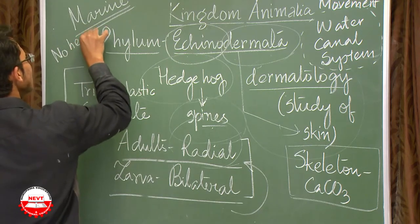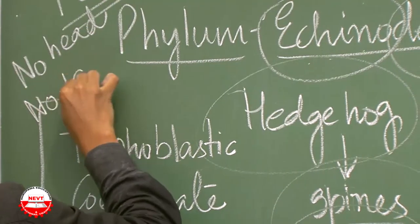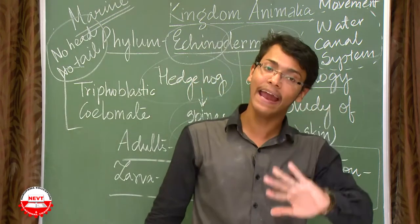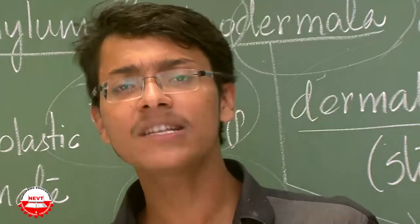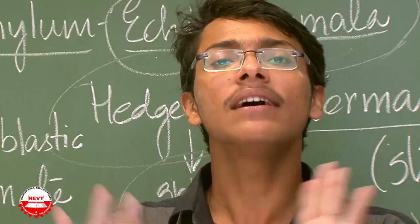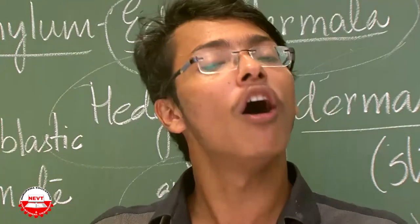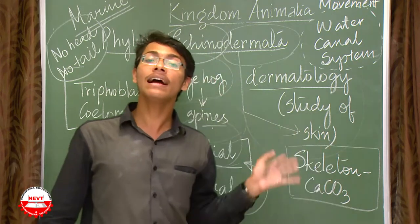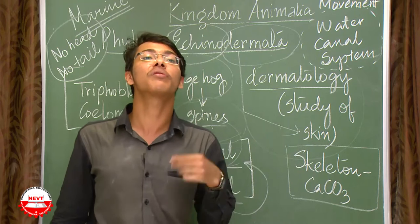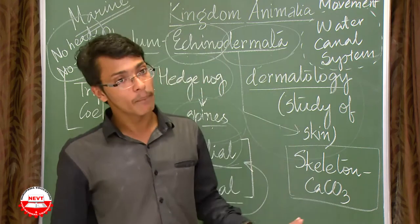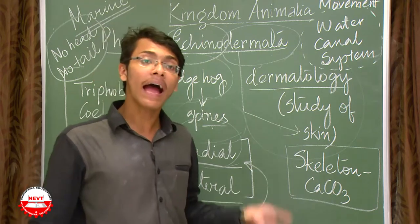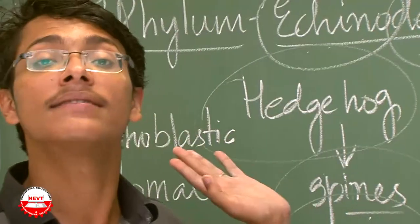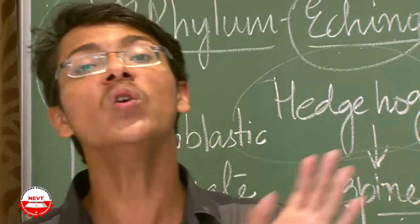There is no head and there is no tail — only a body. The body has no head, no tail, no right side, no left side — no differentiation of head and tail. To summarize: body full of spines, bilateral symmetry in larvae but radial symmetry in adults, triploblastic, coelomate, open circulatory system, and a water canal system for movement.